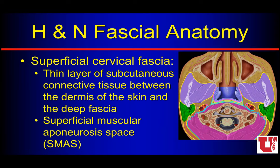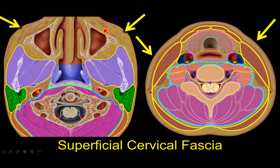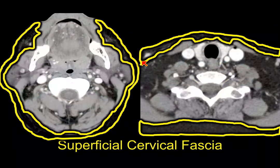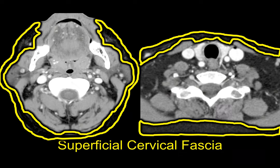First, we have the superficial cervical fascia. This is just a thin layer of the subcutaneous tissue that's between the dermis of the skin and the deep layer of the deep cervical fascia. We sometimes refer to this as the SMAS — the superficial muscular aponeurosis system — all the voluntary and involuntary muscles of facial expression and the subcutaneous fat around them. We can think about that as mostly the platysma and all the subcutaneous fat between the dermis of the skin and the deep layer of the cervical fascia.